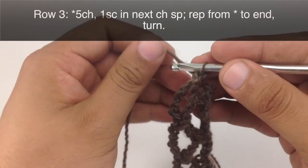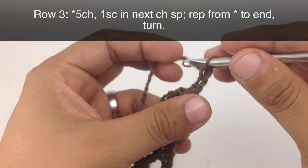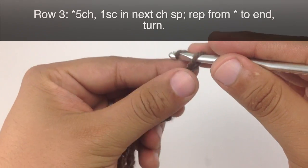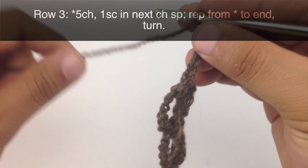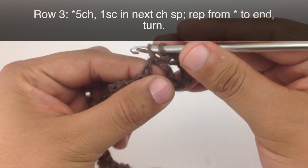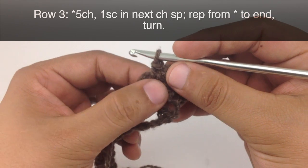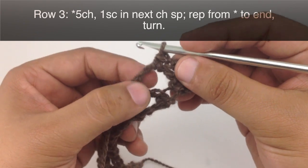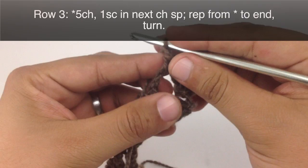Row 3. We are going to begin our repeat by chaining 5. Then we are going to do a single crochet into the next chain space right in the middle there. If you wanted to you could also do a single crochet into the center chain which would be the third chain of the 5 chain space, but that is a little bit more tedious.